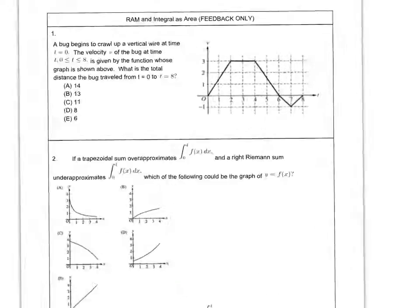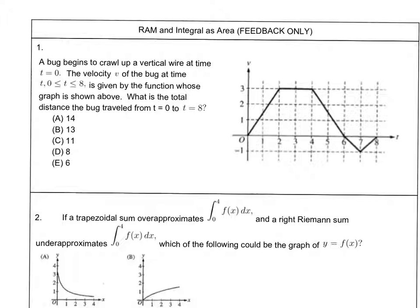Next up we've got some RAM and some integrals area stuff. The first part is asking about a bug crawling up a vertical wire and the velocity is given by this graph over here. The total distance, that's a really big deal because that means that we don't care if this thing is positive or negative, we're going to add those up anyway. The bug travels from zero to eight, so this is really an area question. We're accumulating distance as we go. I'm going to break this up into pieces that are easy to do.